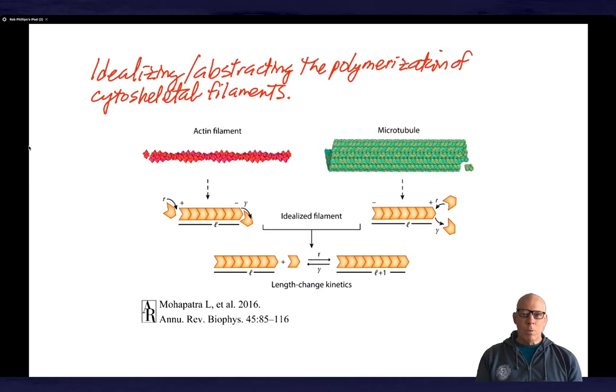And the way that we're going to be thinking about these from the physical perspective is that the elongation of these filaments will take place through an additive reaction shown on the lower part, which shows you a polymer of length L to which a monomer is added at rate R, which leads to now a polymer of length L plus 1. And this idealization is fine and interesting,